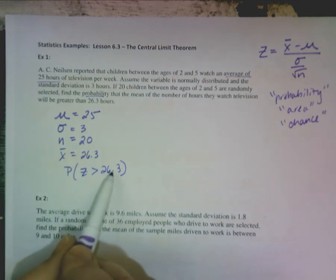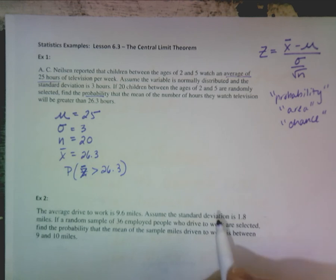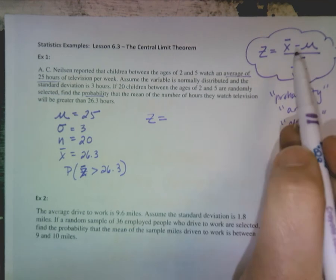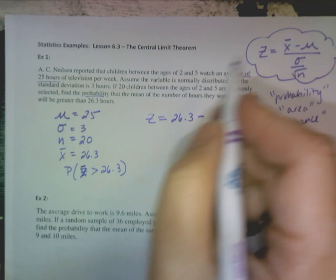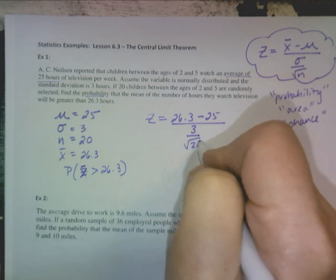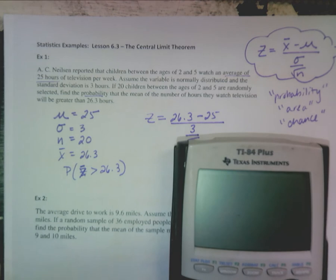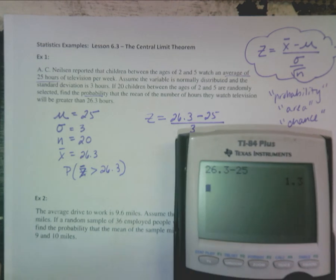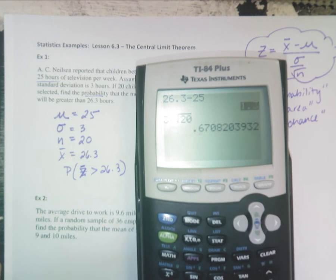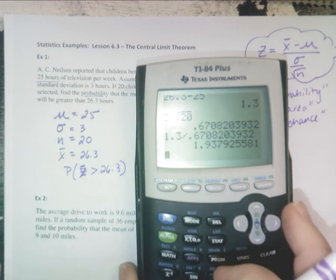We're going to convert to a z using this formula. So x bar is 26.3, minus the mean 25, over standard deviation 3, divided by square root of 20. Please be careful when you put this into your calculator. Make sure you do 26.3 minus 25 — the top is 1.3. Then do the bottom: 3 divided by square root of 20. And I get a z of 1.937 or 1.938.